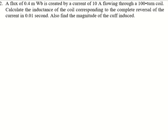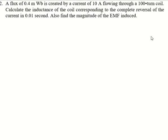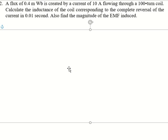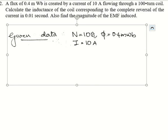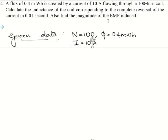Next question: a flux of 0.4 milliweber is created by a current of 10 ampere flowing through a 100-turn coil. Calculate the inductance of the coil. For the complete reversal of current in 0.01 second, find the magnitude of EMF induced. Given data: flux φ = 0.4 milliweber, number of turns N = 100, current I = 10 ampere.